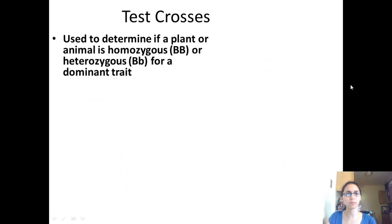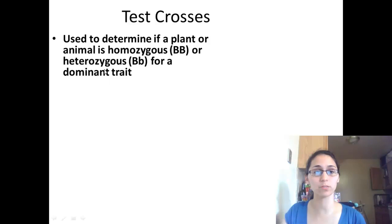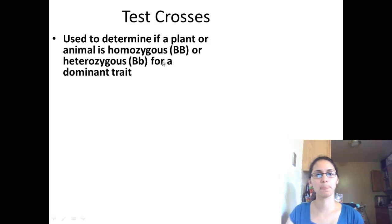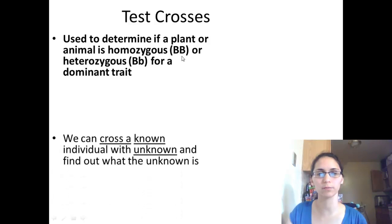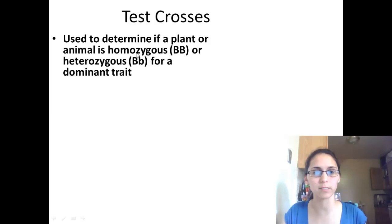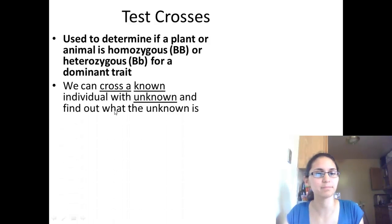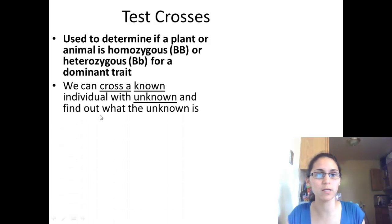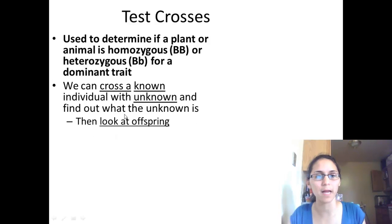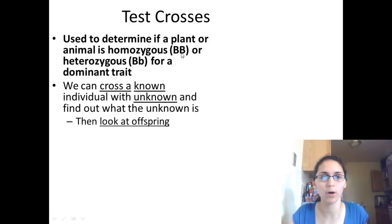Test crosses are used to determine if a plant or animal is homozygous or heterozygous for a dominant trait. Both of these would represent the dominant trait — one has two dominant alleles, and the other has a recessive allele, but the dominant gene masks it so it also looks dominant. We can cross a known individual with an unknown to find out what the unknown is by looking at their offspring to determine if it is homozygous dominant or heterozygous with a recessive allele.